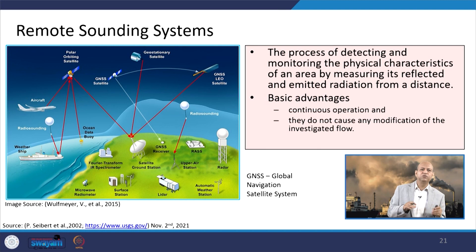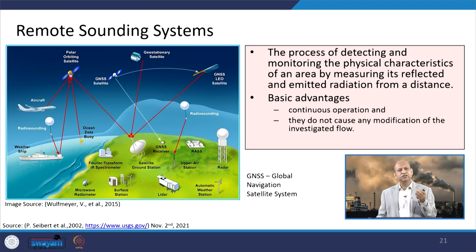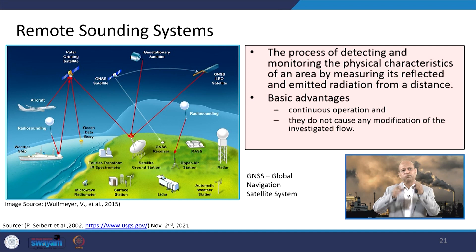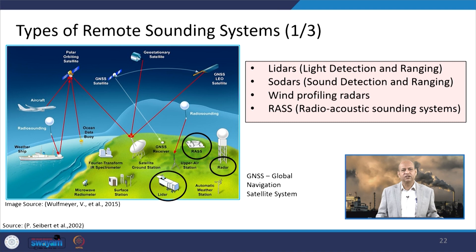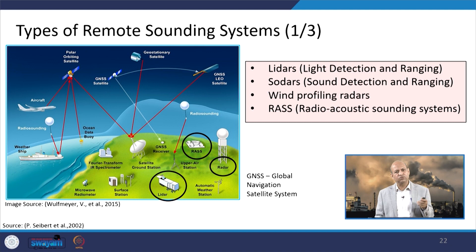Remote sounding systems allow observations from a distance with continuous operation and do not cause modifications to the investigated flow — unlike towers or balloons which slightly alter local flow. Types of remote sounding systems include: Light Detection and Ranging (lidars), Sound Detection and Ranging (sodars), wind profiler radars, Radio Acoustic Sounding Systems (RASS), and Global Navigation Satellite Systems (GNSS).